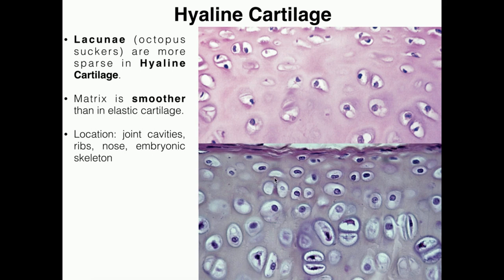In hyaline cartilage, we still have these octopus suckers — these lacunae — which you do need to be able to recognize. But notice that the matrix is a lot smoother. If you look outside of the lacunae, this looks like a much smoother matrix than it does in elastic cartilage. That's sort of the giveaway that it's hyaline cartilage. Also in hyaline cartilage, generally speaking, these lacunae are not as tightly packed together — they can be a little more sparse, but you should still easily be able to see them.